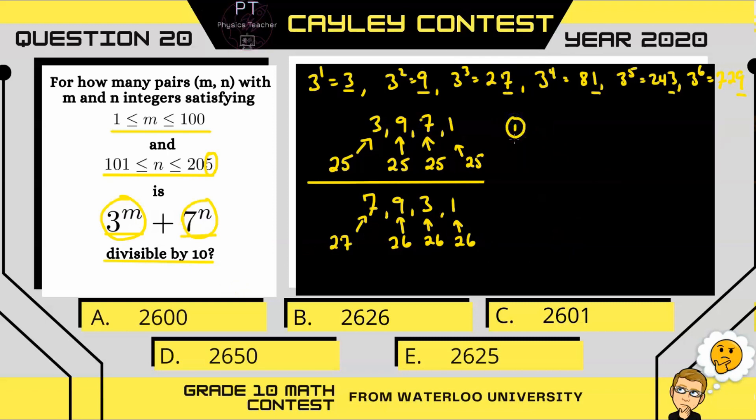The first way is if we have 3 to the m to have the ones digit to be 3, and we have 25 possibilities for that to happen. And if that is mixed with a 7 in our 7 to the n, then we will have the 3 plus the 7 equal 10, and so that number will be divisible by 10. And we have a total of 27 digits where that is the case.